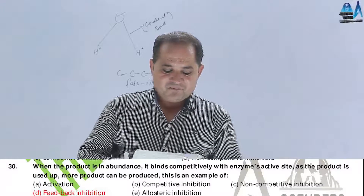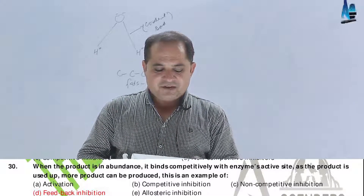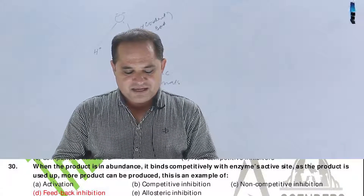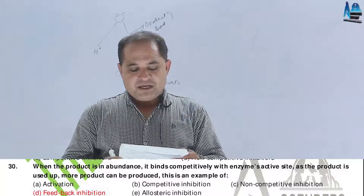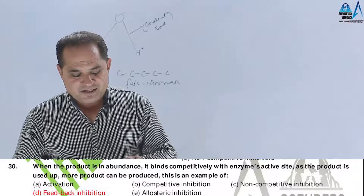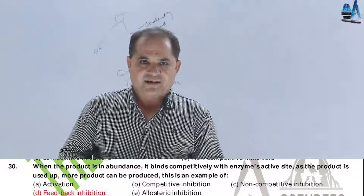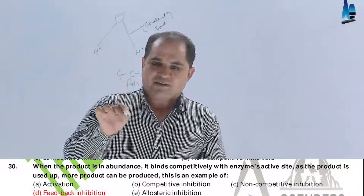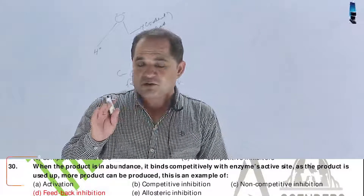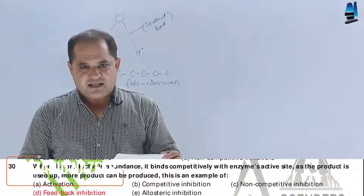Question number 30. When the product is in abundance, it binds competitively with the enzyme's active site. As the product is used up, more product can be produced. This is an example of: A, activation; B, competitive inhibition; C, non-competitive inhibition; D, feedback inhibition; E, allosteric inhibition. When the product is abundant, it blocks the enzyme's active site so that the reaction slows and no more product is made — this is called feedback inhibition. Answer should be D. We will meet in the next lecture — thanks.